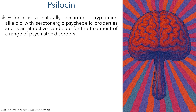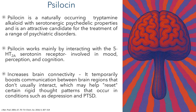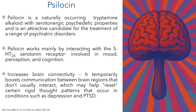Psilocin is a naturally occurring tryptamine alkaloid with serotonergic psychedelic properties and is an attractive candidate for the treatment of a range of psychiatric disorders. It works by interacting with the 5-HT2A serotonin receptor, which is involved with mood regulation, perception, and cognition. This interaction increases brain connectivity, temporarily boosting communication between brain regions that don't usually interact. It has been proposed that this change to the default mode network may help reset certain rigid thought patterns that occur in conditions such as depression and PTSD.